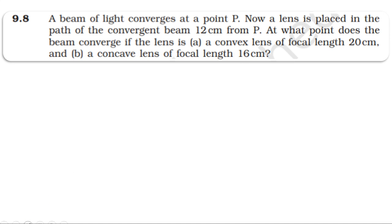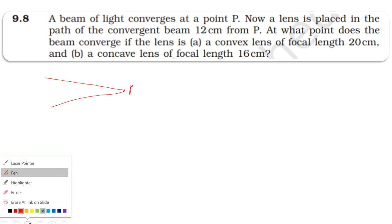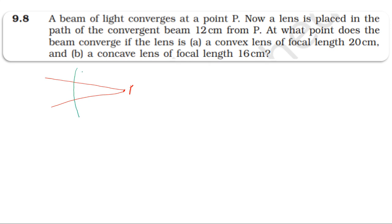So now we have a converging beam. The converging beam is here, and point P is converged in the path of the converging beam. Now we have a convex lens placed. The incident ray is converging here — the object is here, and the object is a virtual object. The object distance is measured from the optical center. The lens is placed 12 cm from P, so the object distance is plus 12 cm.